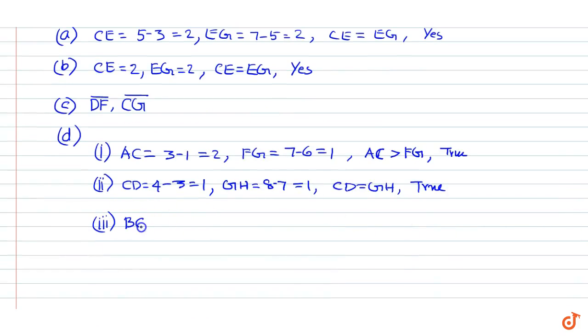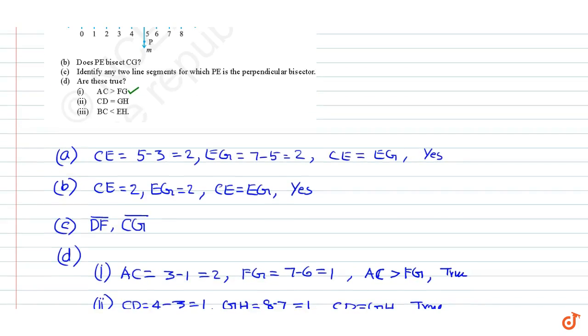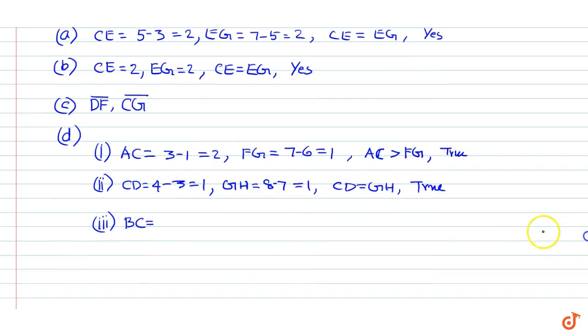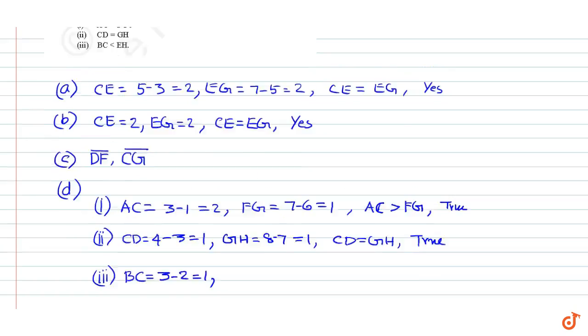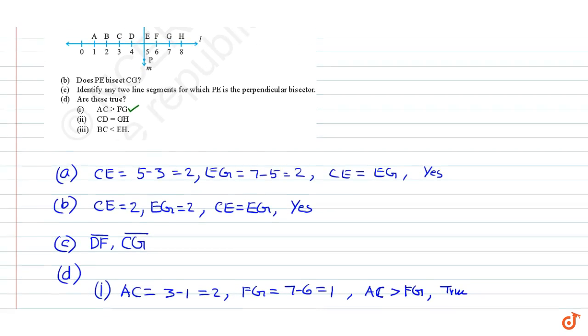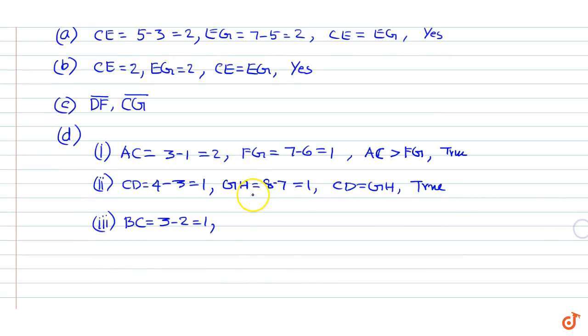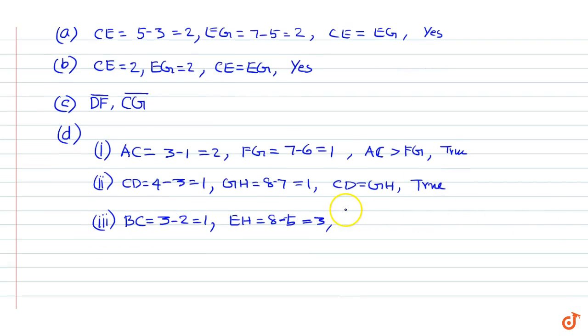Part (iii): BC < EH. BC = 3 - 2 = 1, EH = 8 - 5 = 3. Therefore BC < EH. The answer is true.